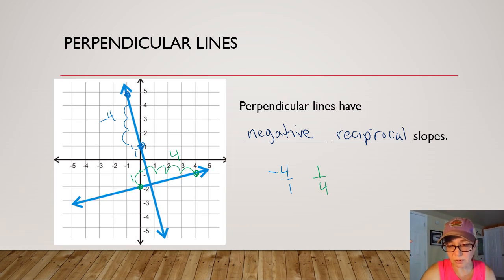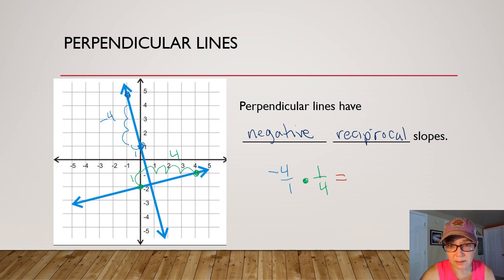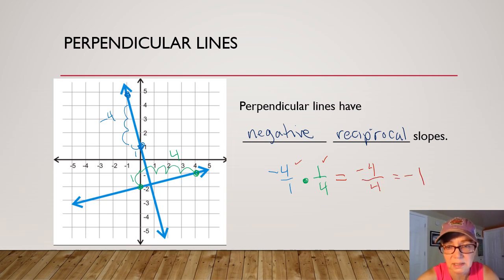So negative reciprocal means change the sign and flip it over. Notice something: a lot of books will say that the slopes of perpendicular lines multiply to make negative one. Let's check that out. Negative four times one fourth — negative four times one is negative four, and one times four is positive four — and that does indeed equal negative one.